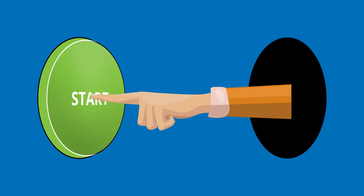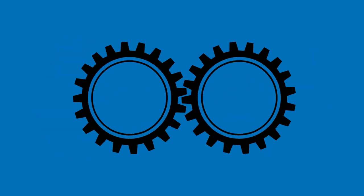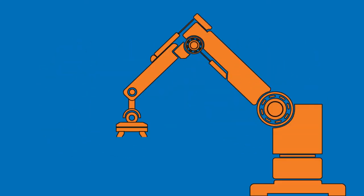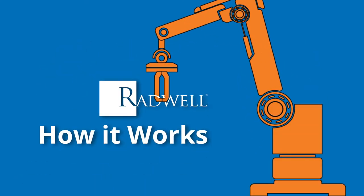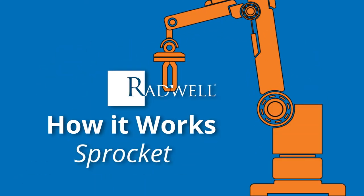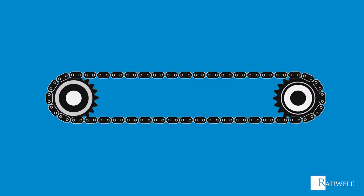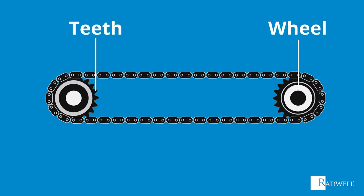First, let's review the main components of a sprocket. A sprocket consists of a wheel with radial projections or teeth, and the chain or track. Now that we've reviewed the main components of a sprocket, let's talk about how it works.